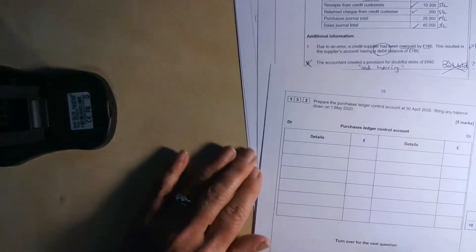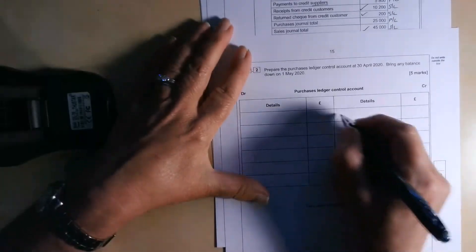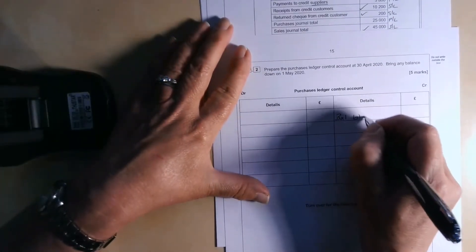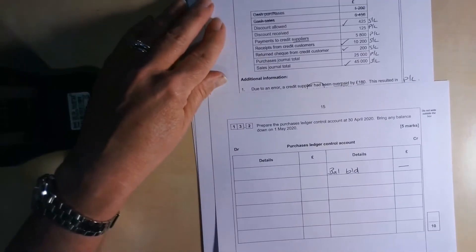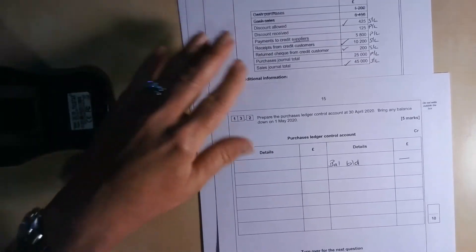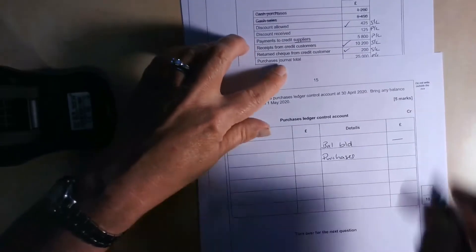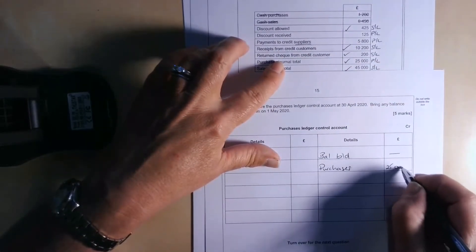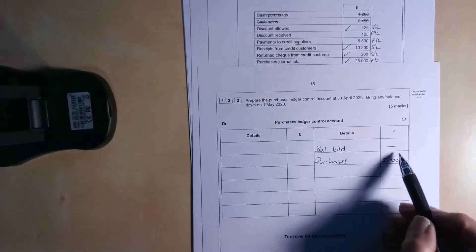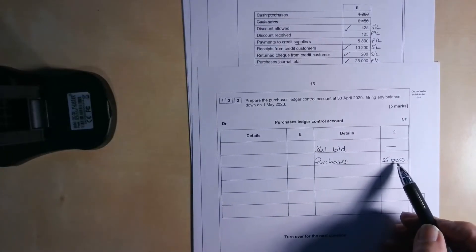Now what we can do is just grab the purchase ledger one, pop that in under there. So remember that with this one again, there is no BALBD. If there was one though, it would be on the credit side. So trade payables are a current liability. So there'd be a credit balance. Okay, so all we've got to do is exactly the same. Pop the purchases in on the credit side. So credit purchases from the purchases journal, £25,000. So anything that makes the balance brought down bigger, in this case obviously the balance brought down is zero. Purchases are going to increase that.